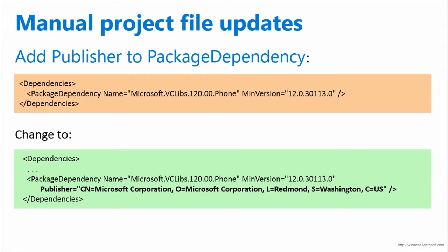This is only going to apply to a few cases, but if you have a package dependency — for example, your 8.1 project took a dependency on something like the Visual C++ libs, which you'd need if you're accessing a native library — that's changed. You now need to put the full publisher name as the publisher attribute. That one I can't do for you; you have to manually edit your project file. Because who knows what the package dependency is.